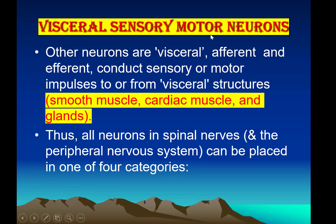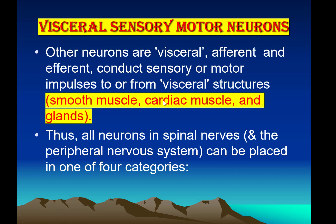Visceral sensory and motor neurons, or visceral afferent and efferent, conduct sensory or motor impulses to or from visceral structures. Viscera means hollow structures like the gastrointestinal tract, heart, lungs, and glands. So the supply of the visceral sensory nerves is to the visceral organs.